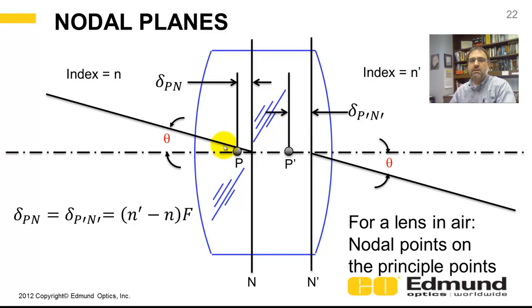If this lens is submerged in air, or water, or it's uniform, it's a uniform homogenous index, your nodal points fall on the principal planes.